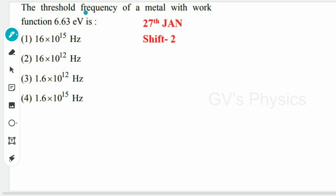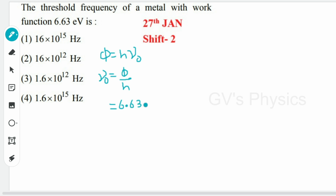First question: the threshold frequency of a metal with work function 6.63 eV is? The formula for work function is: work function = h·ν₀, where h is Planck's constant and ν₀ is the threshold frequency. So threshold frequency ν₀ = work function / h. We'll substitute the given data: work function is 6.63 eV. One electron volt is equal to 1.6 × 10⁻¹⁹ joule.